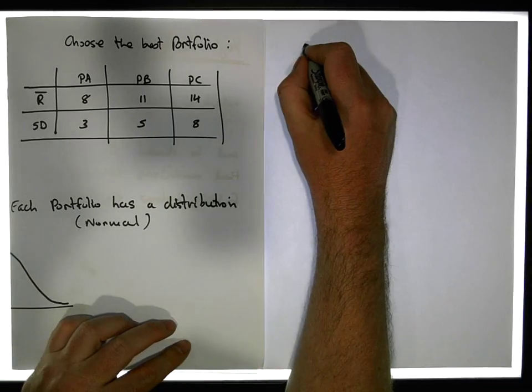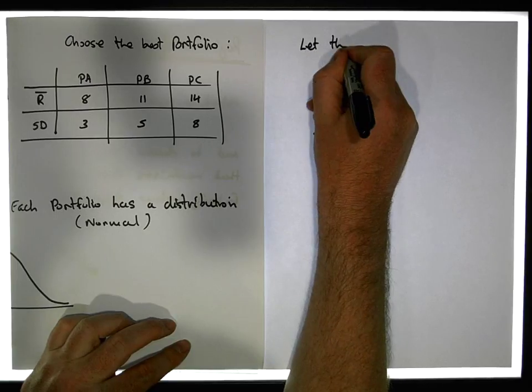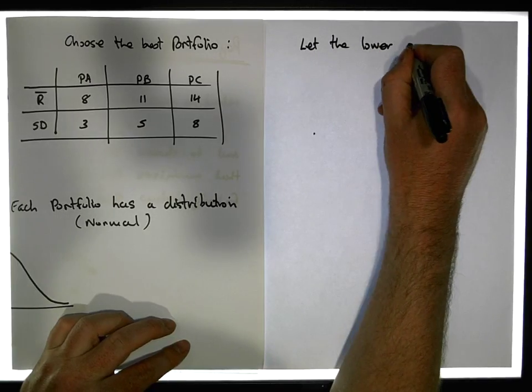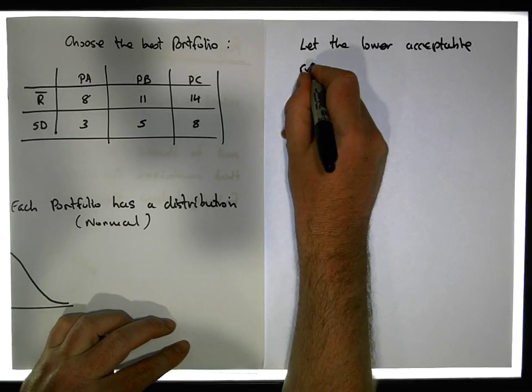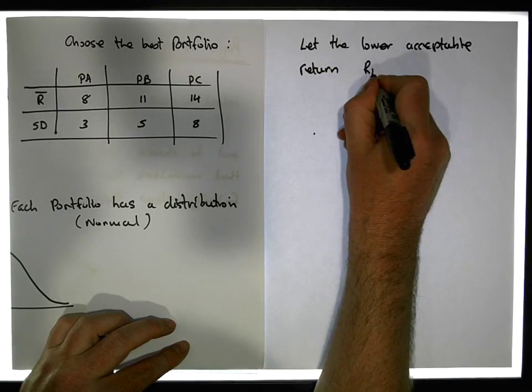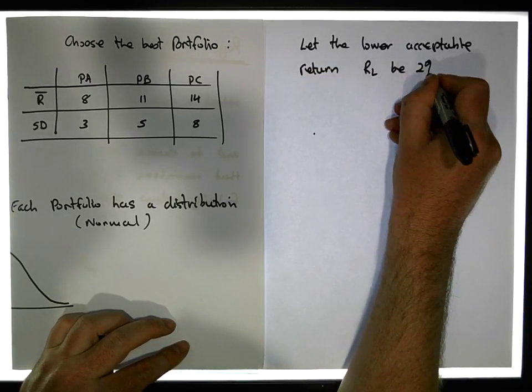So let the lower acceptable return, that's RL, be 2%.